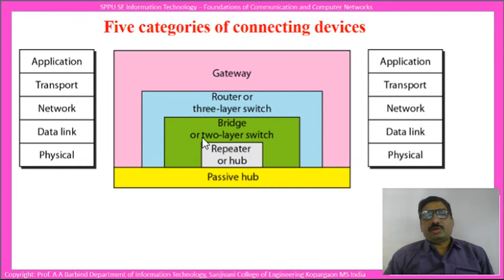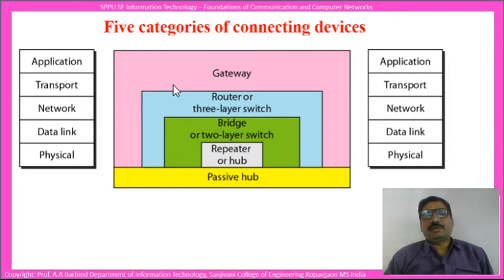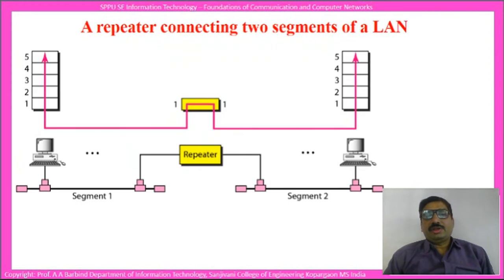A bridge or two-layer switch is considered to operate at two layers: the data link layer and the physical layer. A router or three-layer switch works at three layers: the network layer, data link layer, and physical layer. A gateway works at all five layers up to the application layer. Let us see all these devices in detail one by one.